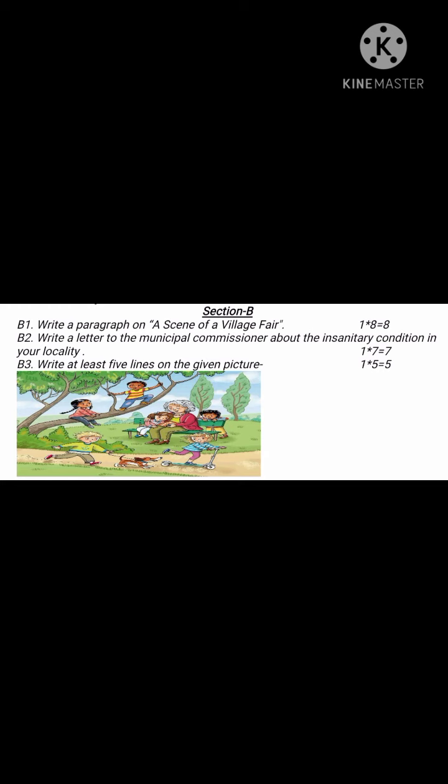The last question is picture composition. You need to write at least five to six sentences in present tense only — do not use past tense. For example: 'This is a scene of a garden. There is a girl sitting with her grandmother. There is a boy with his dog. There are six children.' In this way you frame sentences — they can be short sentences, but in present tense only. This is how you complete your Section B in your fair notebook.